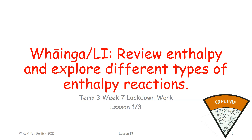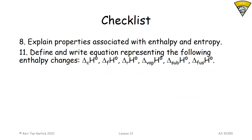That'll also be the end of the chemistry content. Today I want us to review the enthalpy material you learned last year and also do some exploring of the different types of enthalpy reactions — basically getting you used to some of the vocabulary. On our checklist today we're looking at number eight: properties associated with enthalpy and entropy. We'll talk about entropy next week. We're also looking at those delta H equations with little letters behind them indicating the type of reaction — you've seen vaporization, sublimation, and fusion. Now we're looking at the C and F ones, and next week the R one as well.